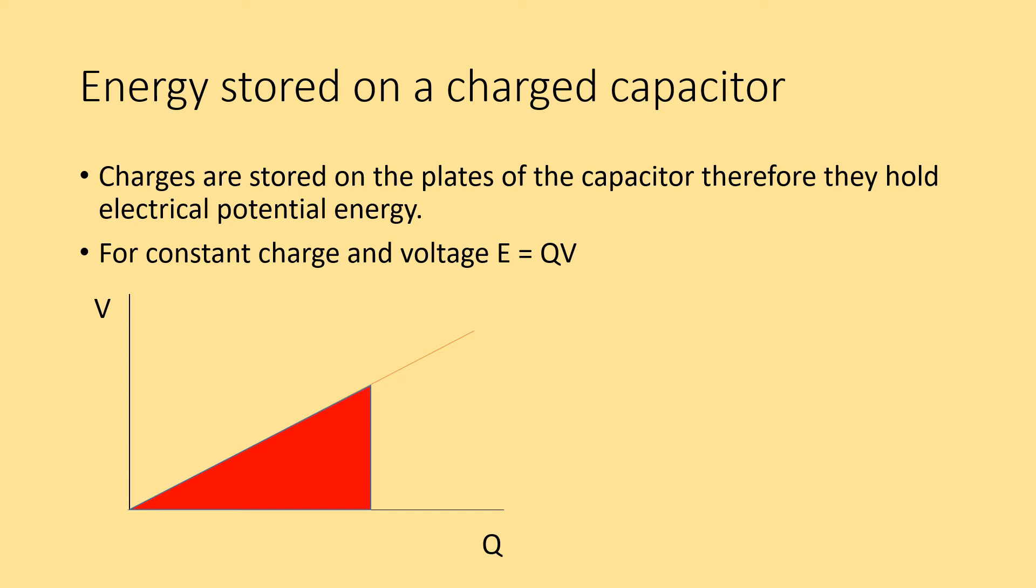This means that our energy is given as a half QV, so a half times the charge multiplied by voltage. You can see that because it's the area under this graph, the area under this graph is a triangle, and so you have half times base times height, so that's half times the charge multiplied by the potential difference. If we had a constant charge and constant voltage, we would have a rectangle there. We could just take the area of that rectangle.